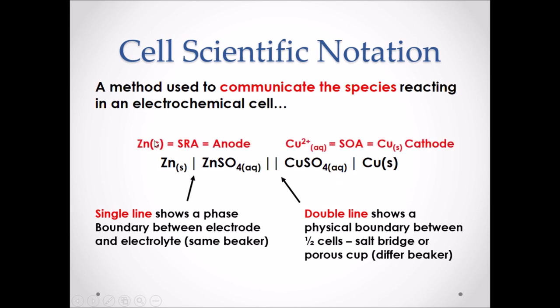Using cell notation, we can still figure out which is the anode and which is the cathode. We use the Chemistry 30 data booklet to find the strongest oxidizing agent, which will be the cathode as it is the site of reduction, and the strongest reducing agent, which will be the anode, the site of oxidation.